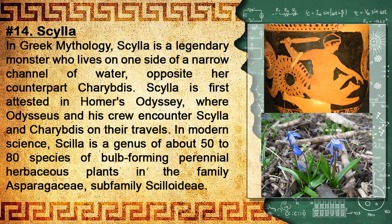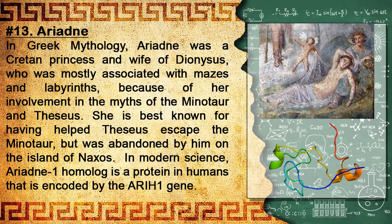Number 14: Scylla. In Greek mythology, Scylla is a legendary monster who lives on one side of a narrow channel of water, opposite her counterpart Charybdis. Scylla is first attested in Homer's Odyssey, where Odysseus and his crew encounter Scylla and Charybdis on their travels. In modern science, Scylla is a genus of about 50 to 80 species of bulb-forming perennial herbaceous plants in the family Asparagaceae, subfamily Scilloideae.